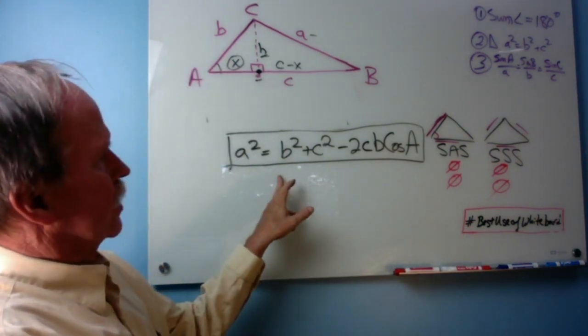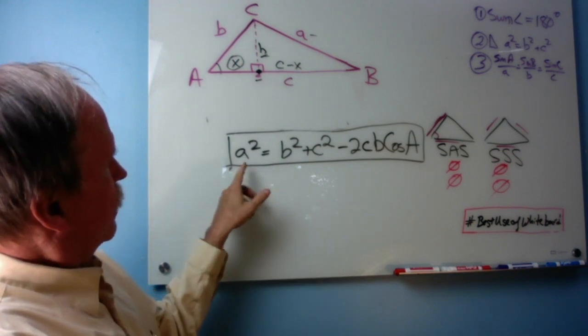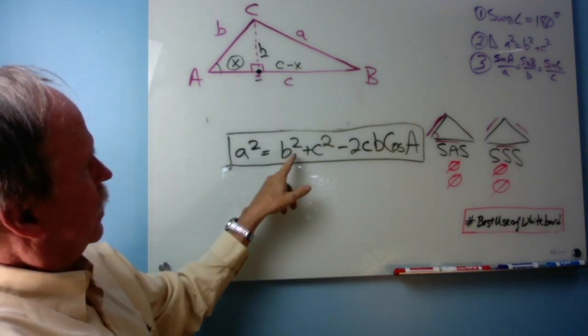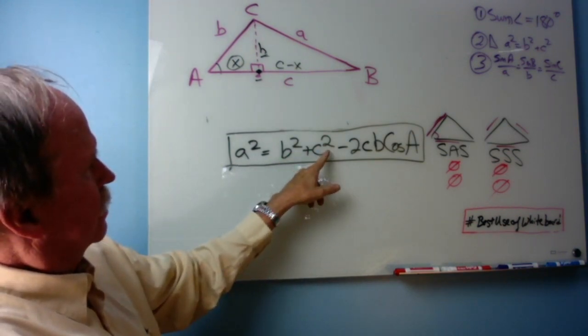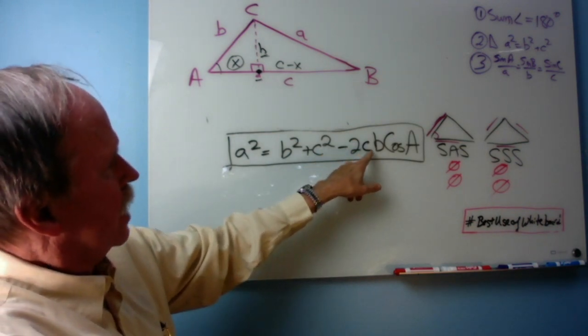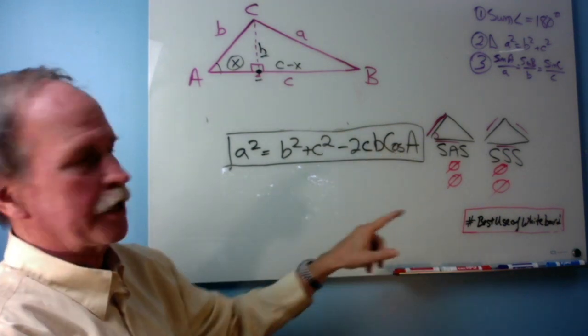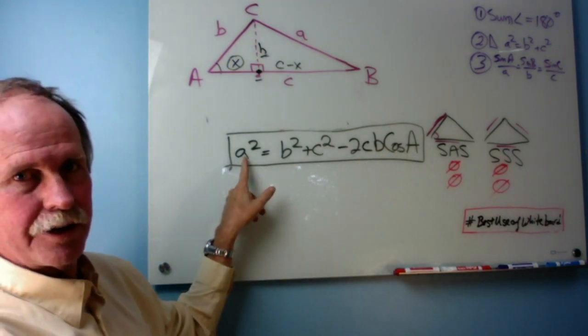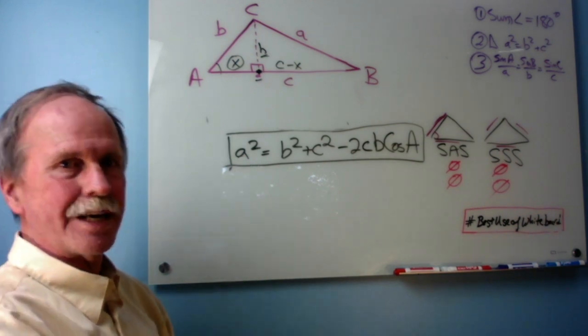All right, let's look at the form of this. So, we have A squared. Then it takes the other two sides. And then it subtracts two times the other two sides, multiplied by the cosine of angle A, which is responsible for that side.